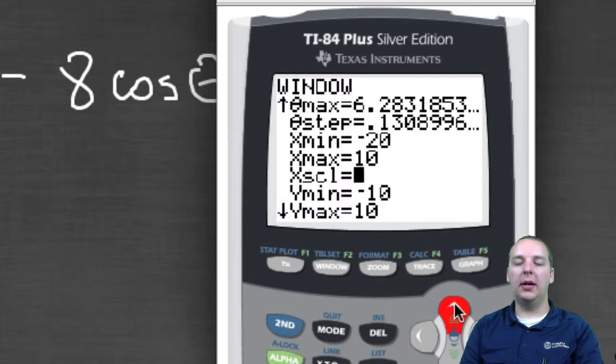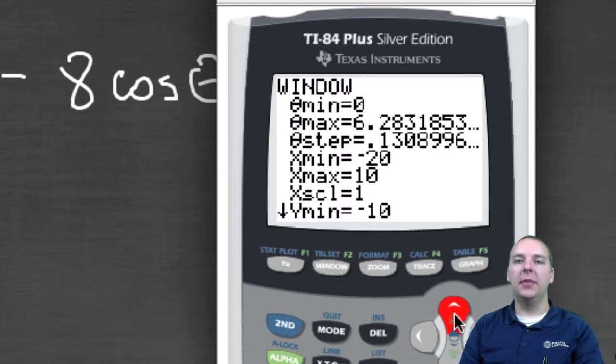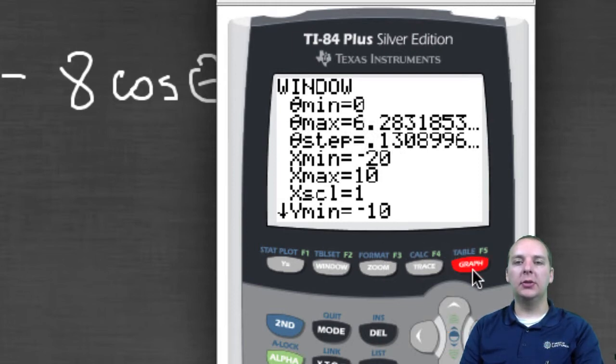And one thing up here that I forgot to mention was you have a theta min and a theta max. As you adjust that theta, it'll sketch out more or less of the curve. Kind of the default setting is 0 to 2 pi. That's the 6.28 number. And so let's graph this again.